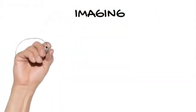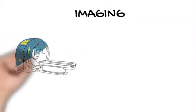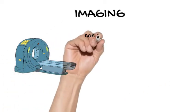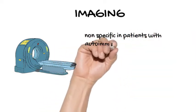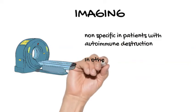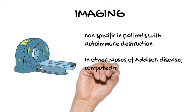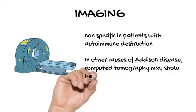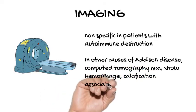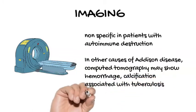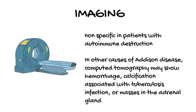Imaging: Radiographic imaging is also helpful in determining the cause of Addison disease, but it is nonspecific in patients with autoimmune destruction. It is important to make a biochemical diagnosis of adrenal insufficiency before radiographic imaging. Computed tomography demonstrates small adrenal glands in patients with autoimmune adrenal destruction. In other causes, CT may show hemorrhage, calcification associated with tuberculosis infection, or masses in the adrenal gland. However, computed tomography is not necessary to diagnose adrenal insufficiency.